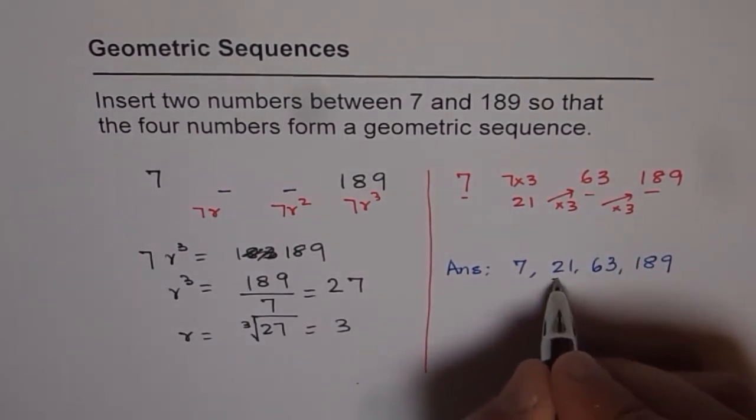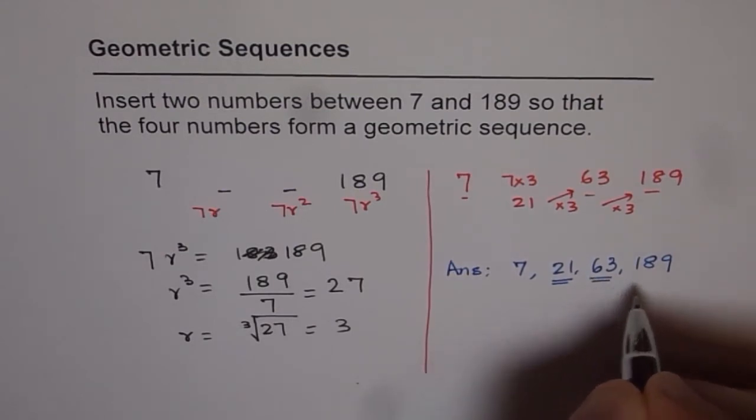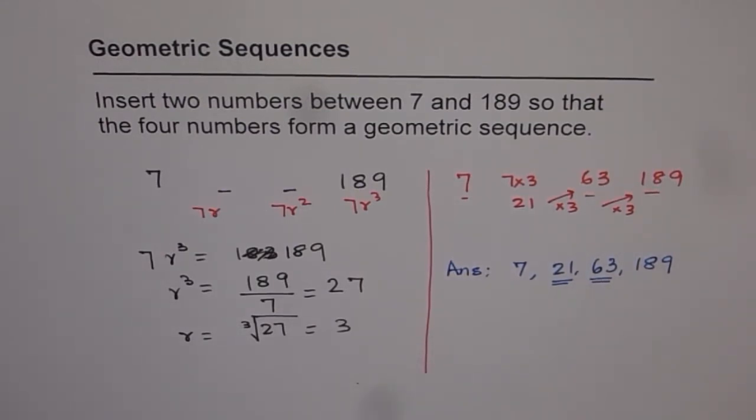So these are the two numbers, which when placed between 7 and 189, will form a geometric sequence. I hope that helps. Thank you.